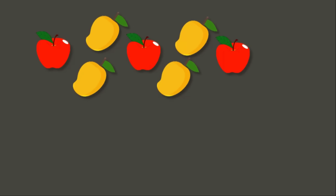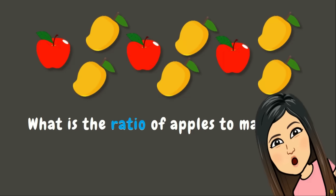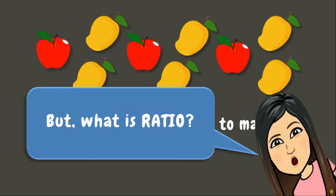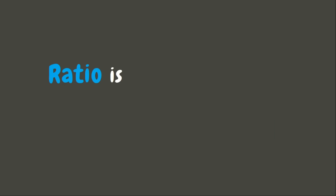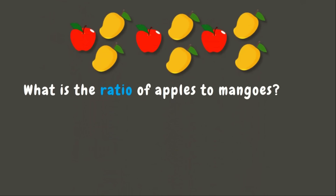Let's have our first example. I bought three apples and six mangoes for my milkshake. The question is: what is the ratio of apples to mangoes? But wait — what is a ratio? Well, ratio is a way of comparing two or more quantities. Here we are asked to get the ratio, or compare the quantity of apples to mangoes.